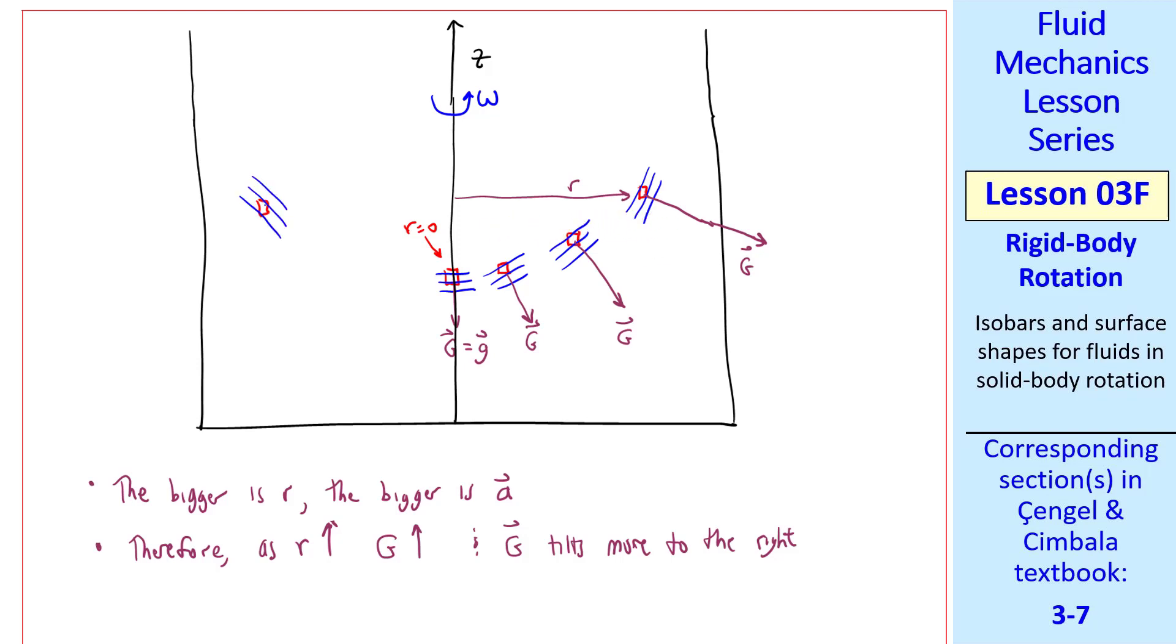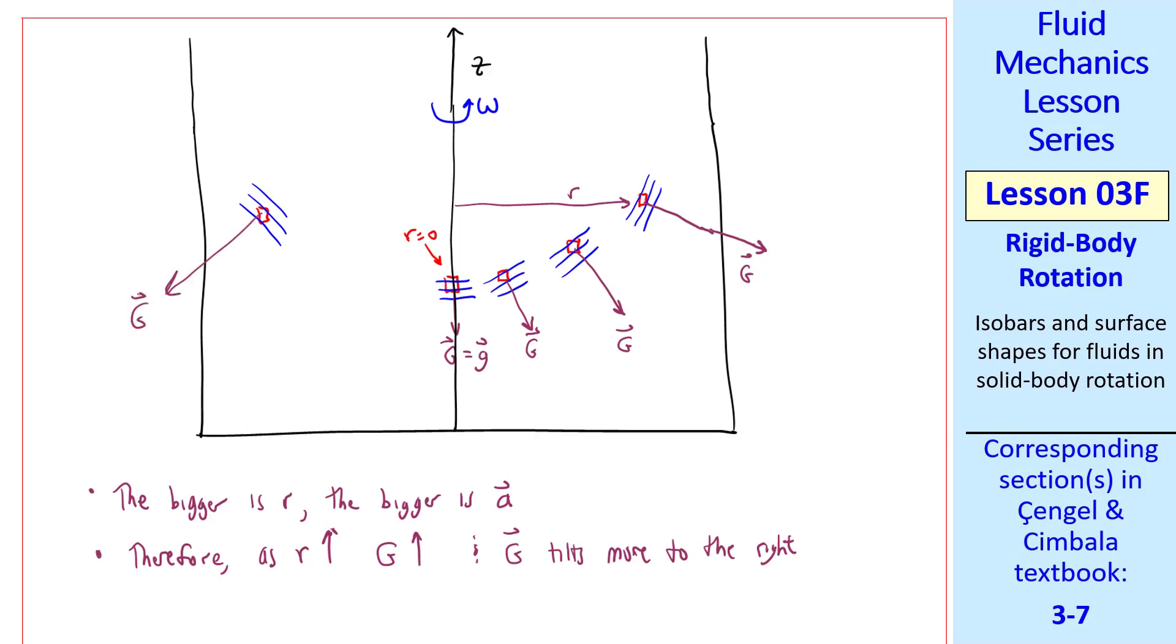There's symmetry on the left side, of course, where g would point to the left. Putting all this together, if we consider these top isobars as the surface, so that all these elements we're talking about are on the surface of the liquid, we can sketch a smooth curve, as shown. Pressure is atmospheric pressure everywhere along this liquid surface, so P equals P atmosphere there.